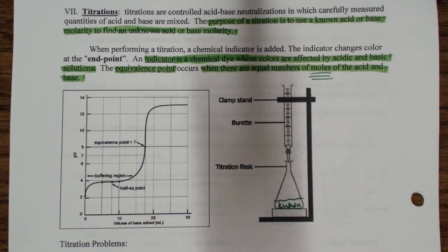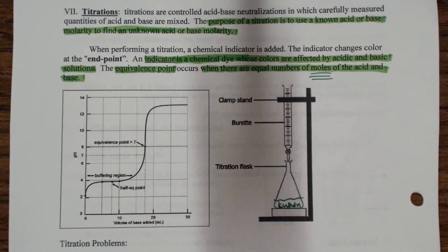A titration is used to find an unknown molarity. For acid-base titrations, we typically use a known acid or base molarity to find an unknown acid or base molarity.